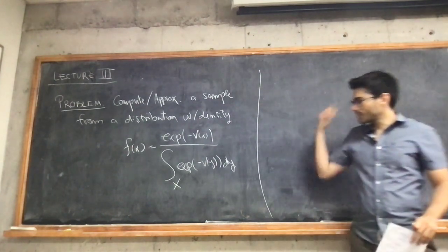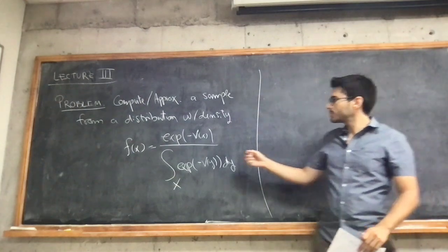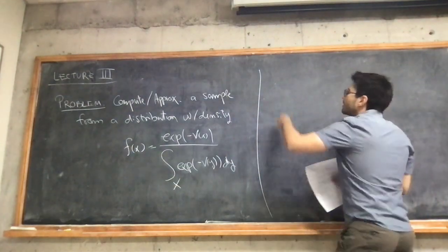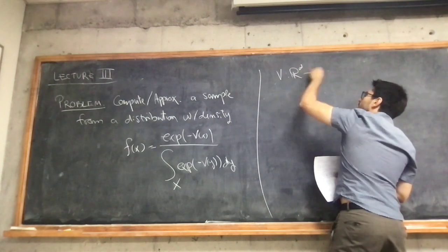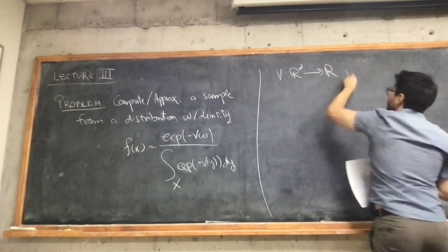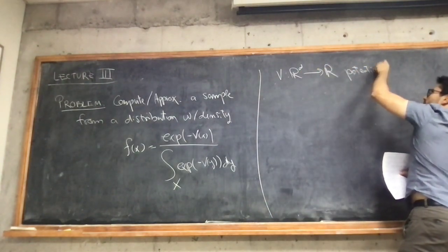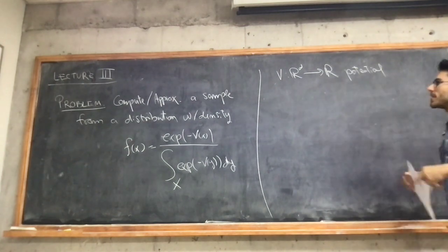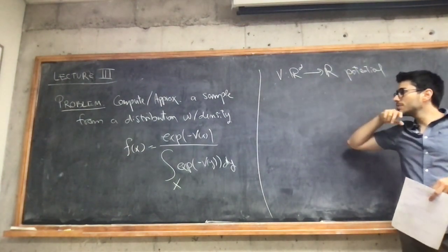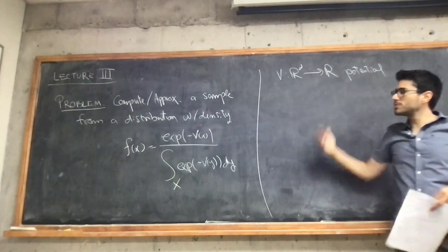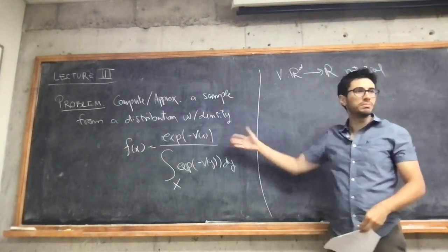To put it in more precise terms: given this function v that we can call the potential function — given some kind of oracle access to this function v — how to, in the most possible efficient way, come up with samples from this distribution.